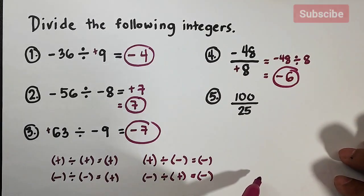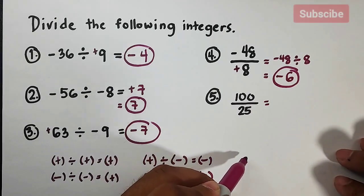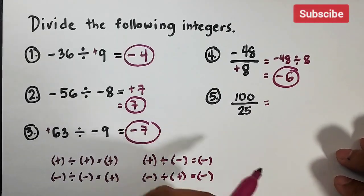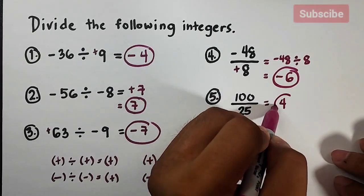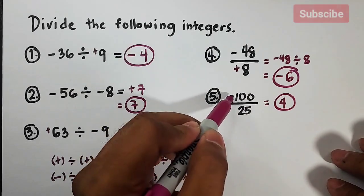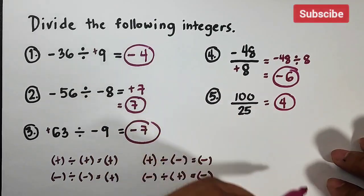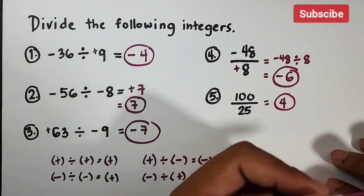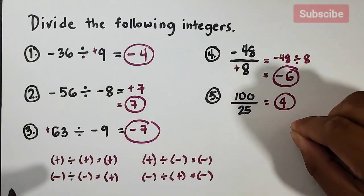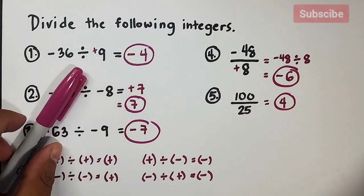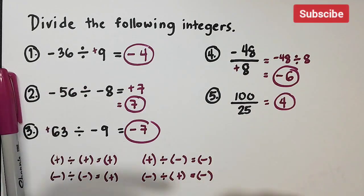Item number five is 100 over 25. This one is fairly easy. Both 100 and 25 are positive — same signs — so the answer is positive. 100 divided by 25 equals four, so the answer is positive four.